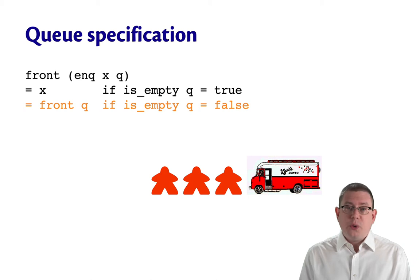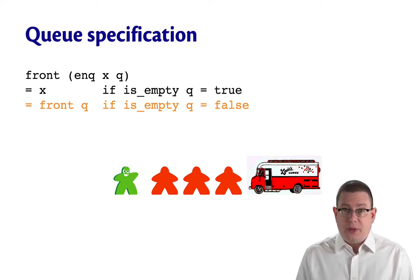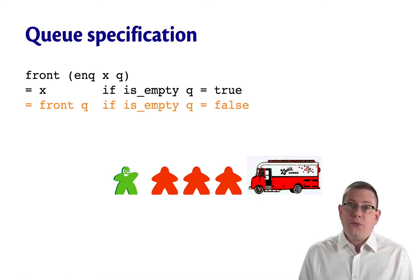On the other hand, suppose you arrive at the food truck and there's a bunch of people in the queue in front of you, all socially distanced appropriately, of course. Well, in that case, what's going to happen after an enqueue? You're going to be at the back of the line there. You've got to wait for all the other people to get their food. So the front of the queue doesn't change. It's still the same person after that enqueue operation. That's how the third equation works.